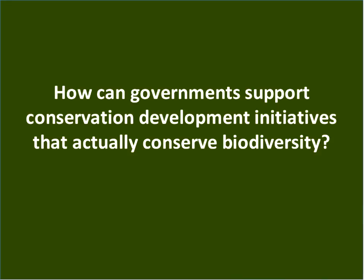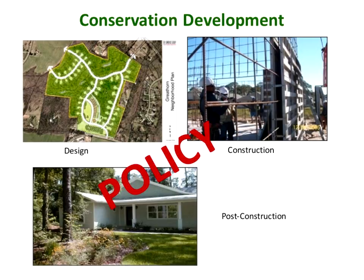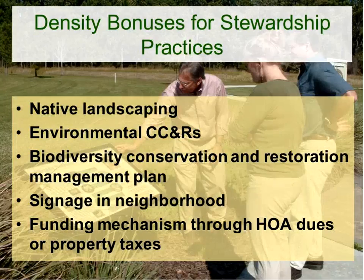How can governments support conservation development initiatives to actually conserve biodiversity? The main gap is that when you think about those three phases — design, construction, and post-construction — about 95% of policy addresses design. Hardly anything addresses construction, and very little with teeth addresses post-construction techniques in terms of conservation developments. We need actual policy with fines behind it, not just verbiage, that addresses construction and post-construction techniques.